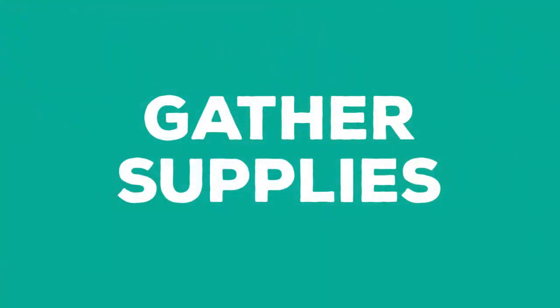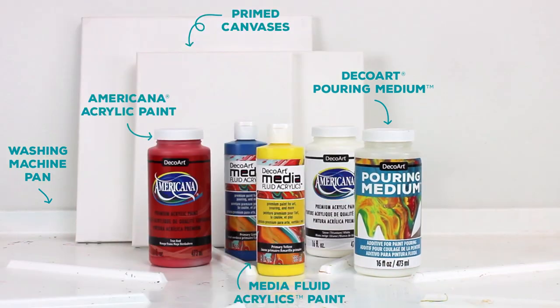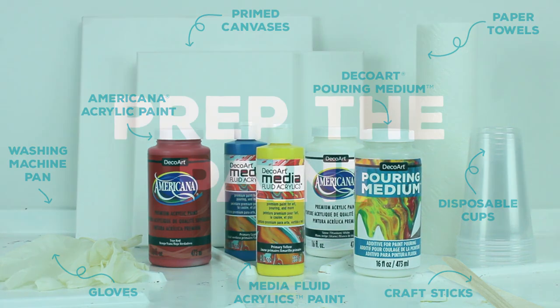Here's a list of the basic supplies you'll need. Note for smaller pieces you can use an aluminum baking tray instead of the washing machine tray to catch the excess paint runoff.